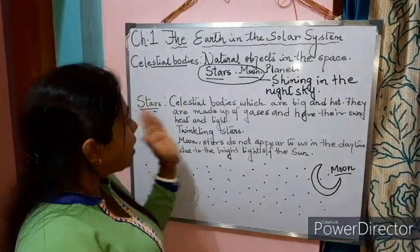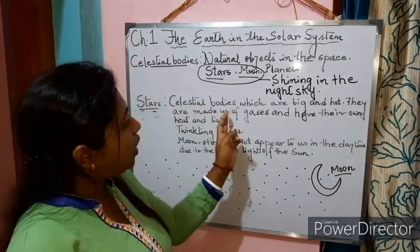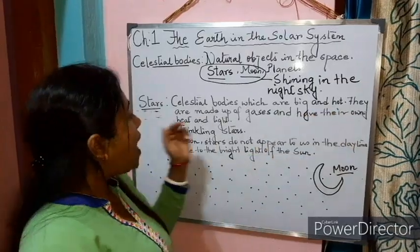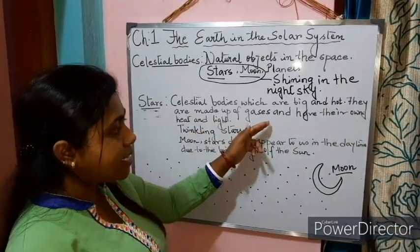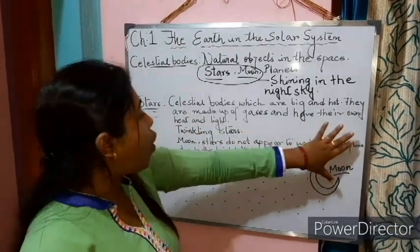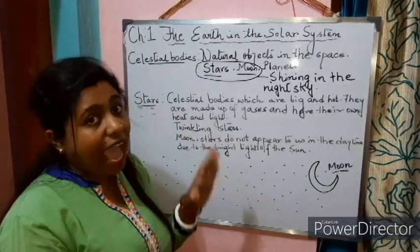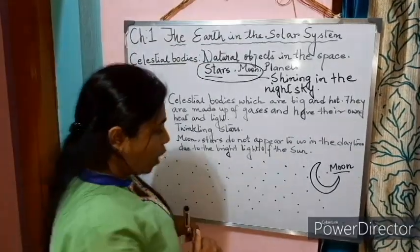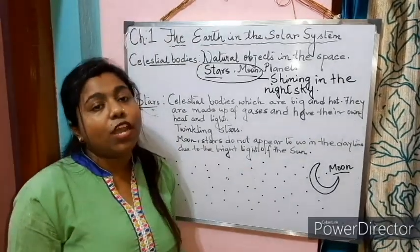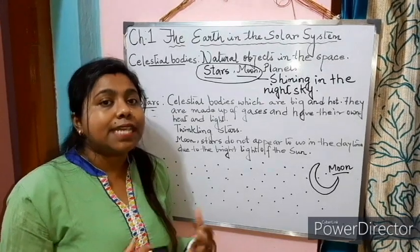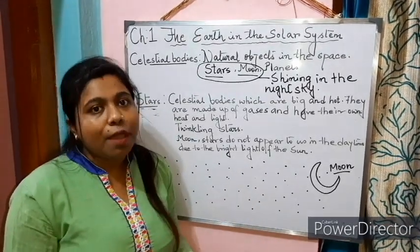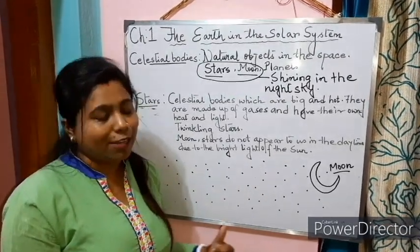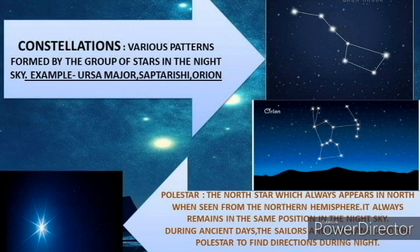So, what are stars? Stars are celestial bodies which are big and hot. They are made up of gases and have their own heat and light, and they twinkle in the night sky. Now, let us go ahead with some patterns that are formed by the stars.